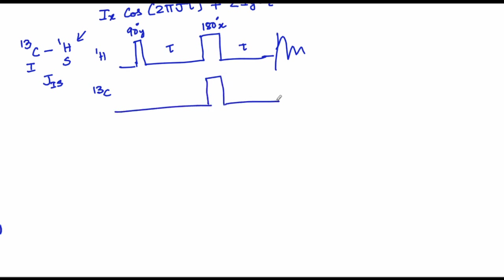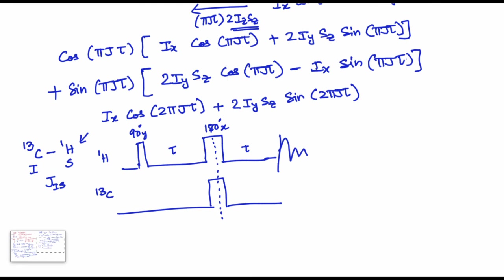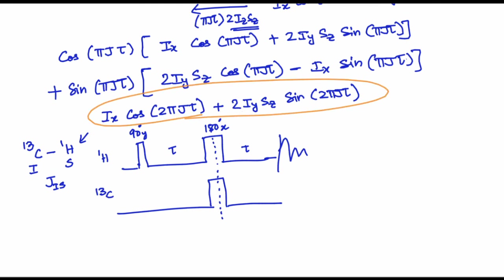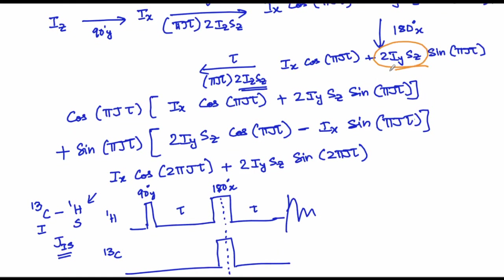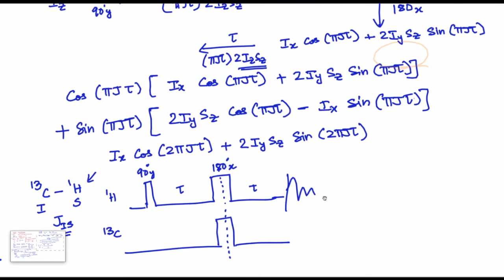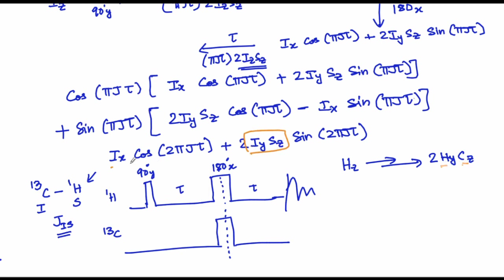In this case, let us say you are applying a simultaneous 180 degree pulse. The result will be exactly the same as what we obtained a moment earlier. This indicates that for two spins i and s sharing a scalar coupling, if you apply a 180 degree pulse felt by both — as in the example just seen — you will get +2IySz here. Starting from Hz, you are able to generate something of the form HyCz, where H is for proton and C is for carbon.